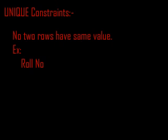The first constraint is the unique constraint. This constraint ensures that no two rows have the same value in the specified field. For example, in our class, no one has the same roll number — that is the concept of unique constraint.